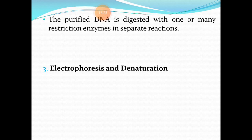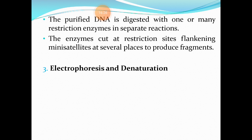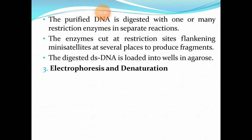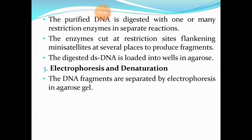The purified DNA is then digested with one or many restriction enzymes in separate reactions. The enzymes cut at restriction sites flanking the mini satellites — the markers — at several places to produce DNA fragments. The digested DNA is loaded into wells for agarose gel electrophoresis. Please note: at this stage, the DNA is still double-stranded.